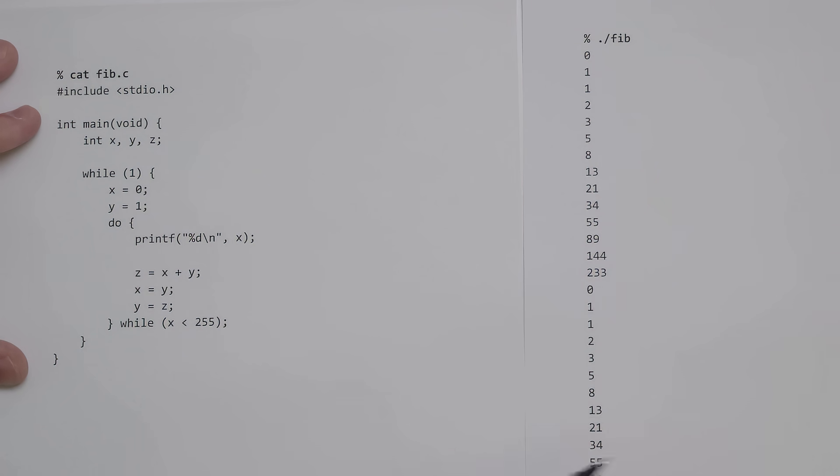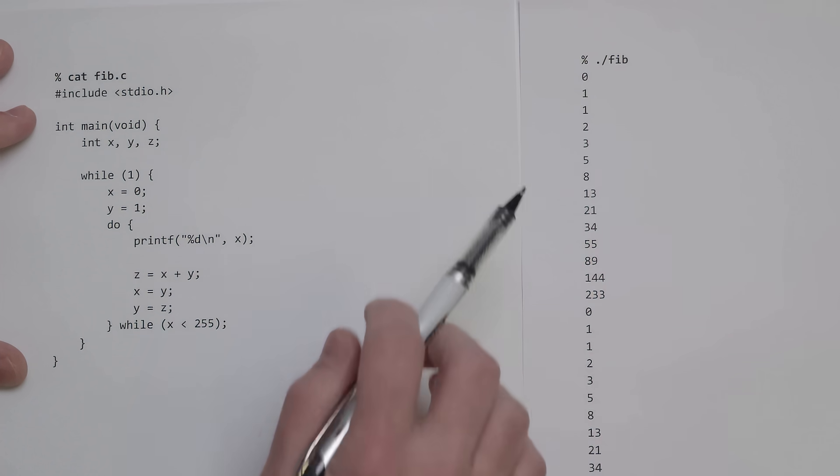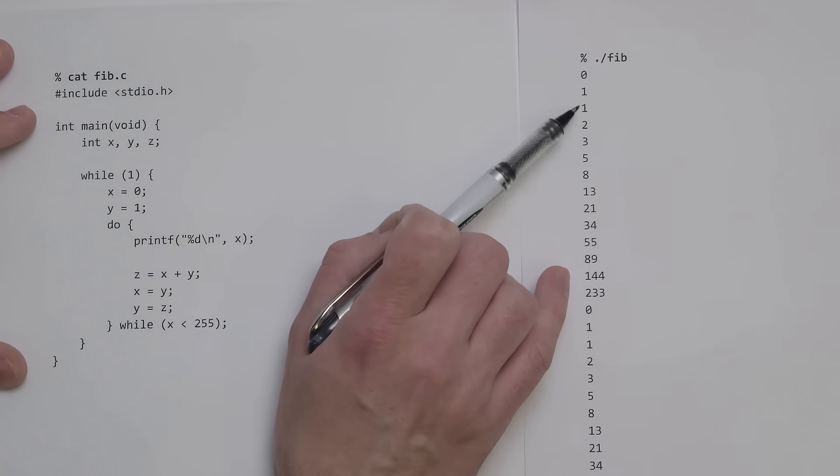Then it just starts over and does this forever. Just as a reminder, Fibonacci numbers start with 0 and 1, and then the next number is just the sum of the last two numbers.